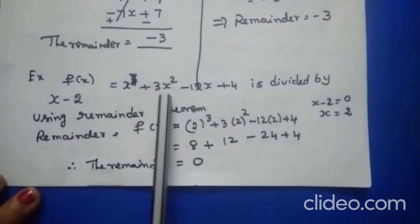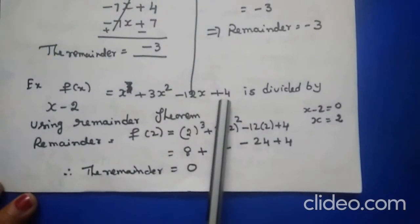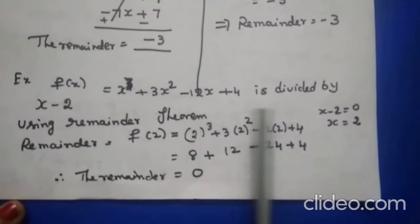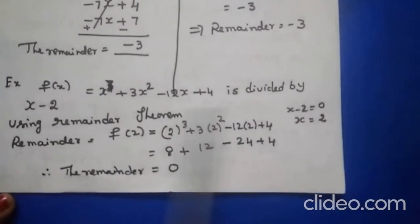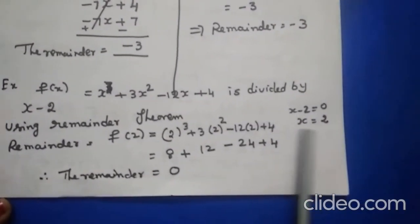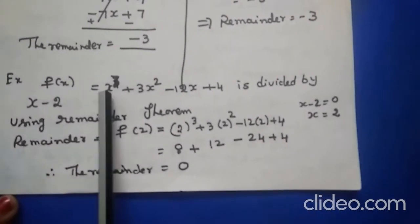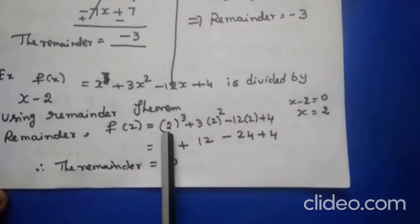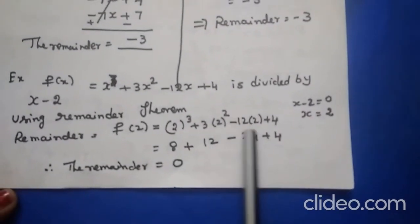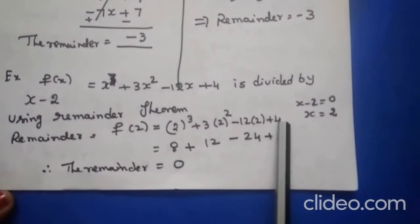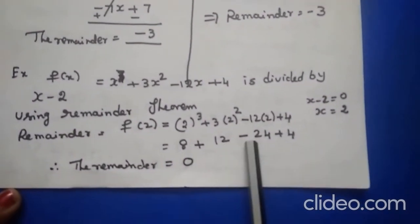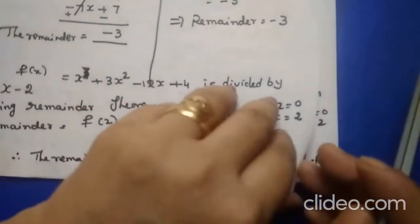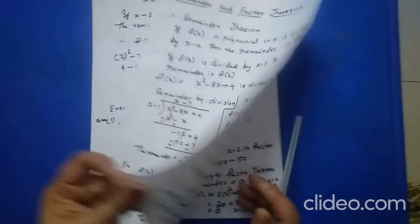f(x) = x³ + 3x² - 12x + 4 divided by x - 2. Using the Remainder Theorem: x - 2 = 0, so x = 2. Substitute: f(2) = 2³ + 3(2²) - 12(2) + 4 = 8 + 12 - 24 + 4 = 0. The remainder is 0.